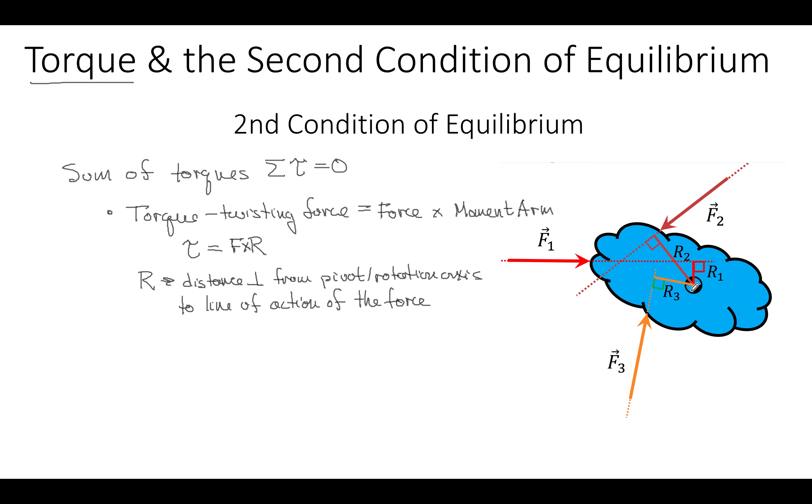F1 has a moment arm R1, because R1 is the perpendicular distance to the line of action of F1. So F1 times this magnitude R is the torque that it would create. It would want to create a clockwise sense of rotation. F2 acts along this direction. Its moment arm R2 is this perpendicular distance to its line of action. F2 times R2 is equal to torque number 2. That would want to cause a counterclockwise sense of rotation. F3 acts along this direction. Its moment arm is R3. The torque 3 would be magnitude of this force times this distance.